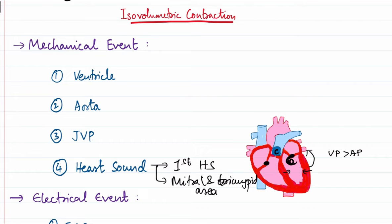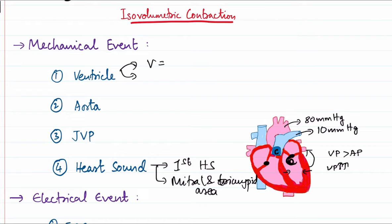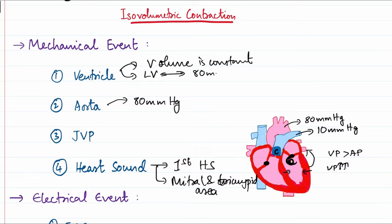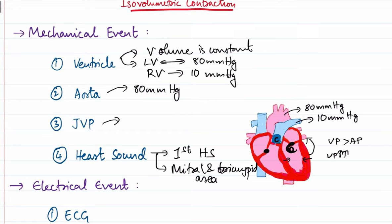During IVC, both the AV valves and semilunar valves are closed. The ventricles contract, volume stays constant, but pressure increases. The left ventricular pressure rises to 80 mmHg (matching aortic diastolic pressure) and the right ventricular pressure rises to 10 mmHg (matching pulmonary vascular pressure). Regarding JVP, the AV valves may bulge into the atria, causing a rise in atrial pressure corresponding to the 'c' wave in JVP.